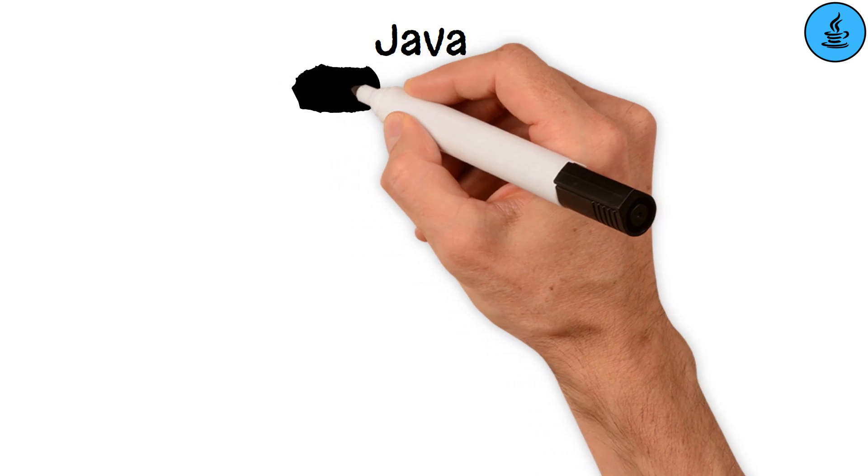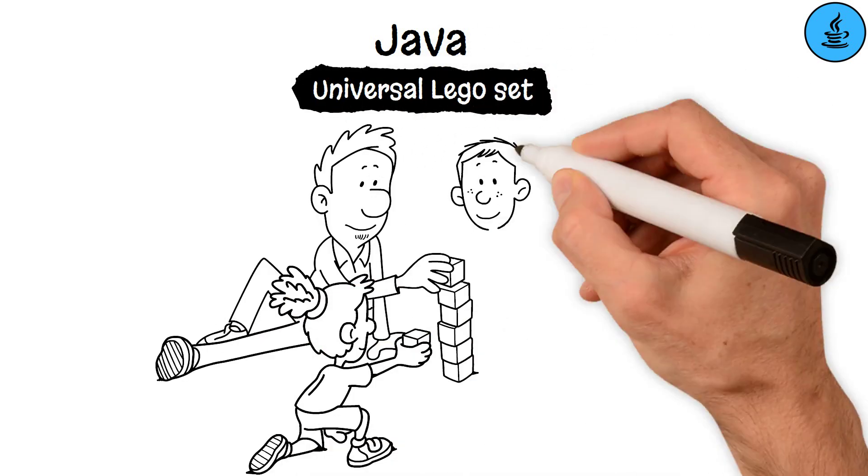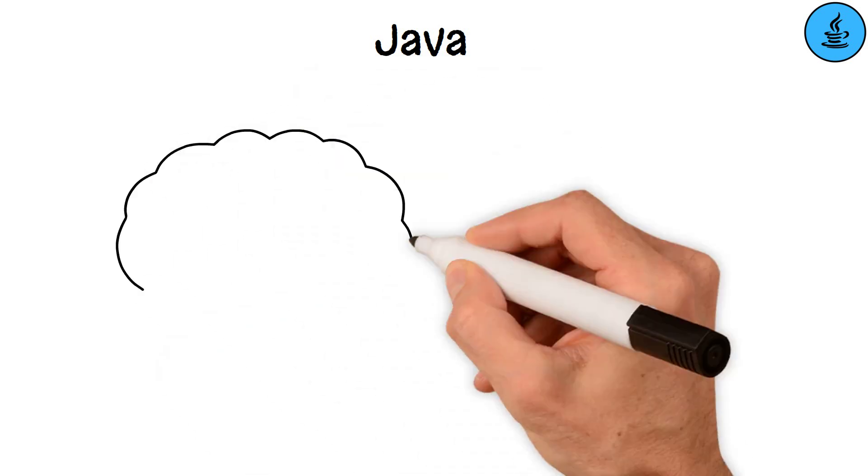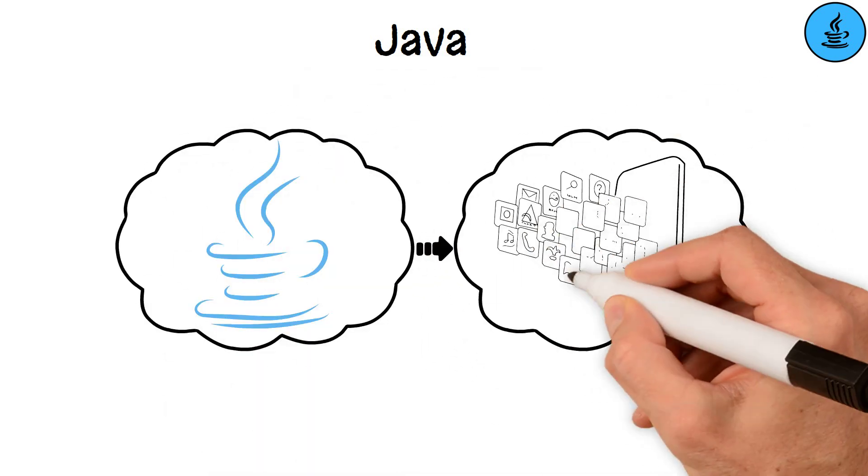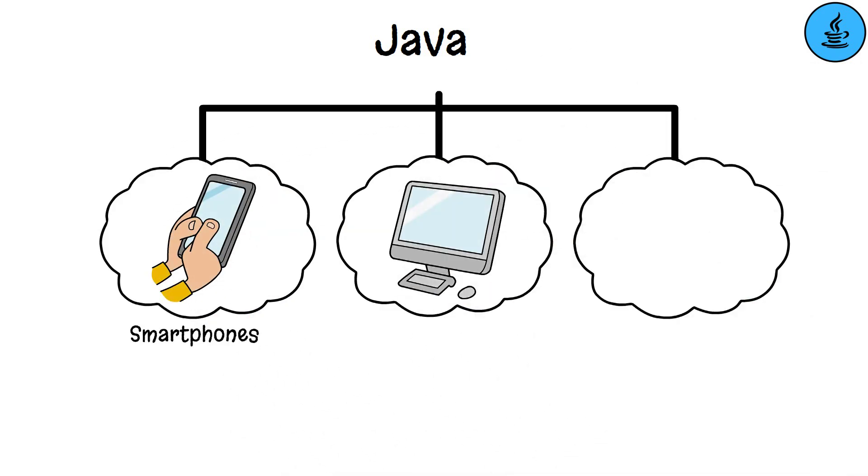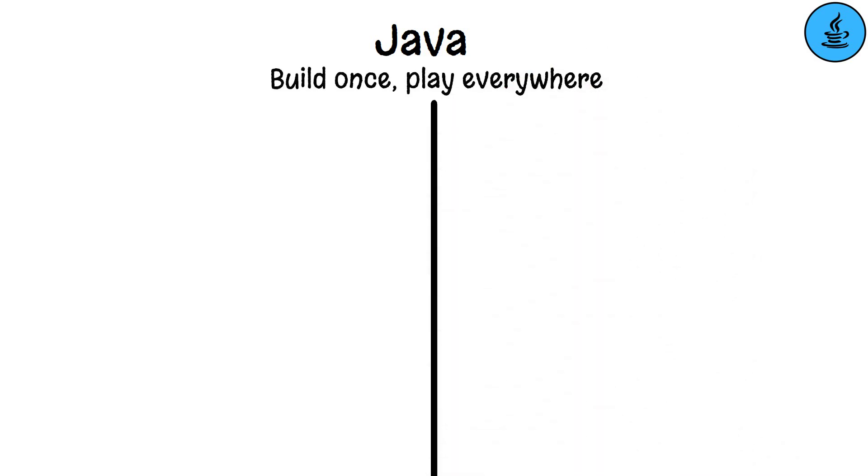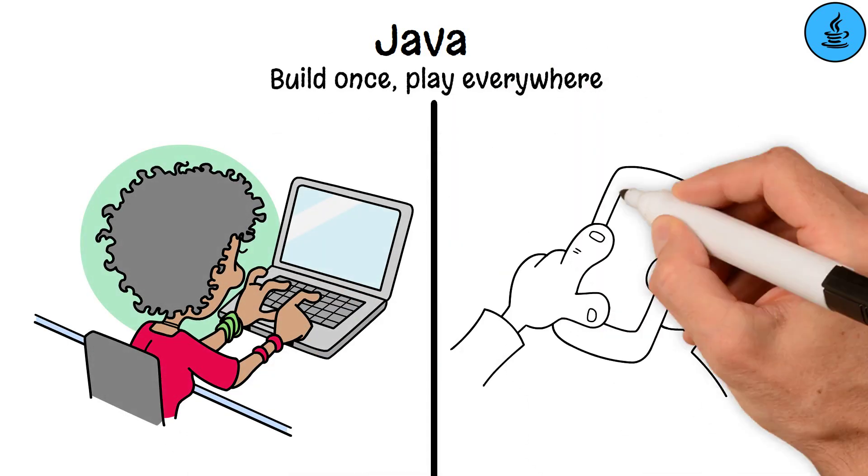Java. Imagine Java as a universal Lego set. Just like you can build anything from Legos, Java lets you construct applications that work seamlessly across various devices—smartphones, PCs, or gaming consoles. Build once, play everywhere, whether it's a desktop application or a mobile app.